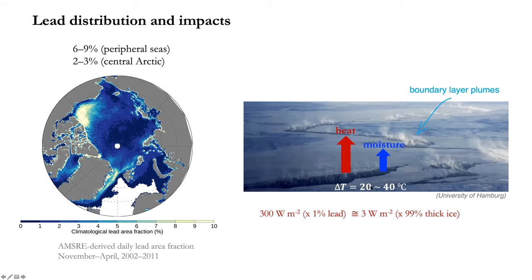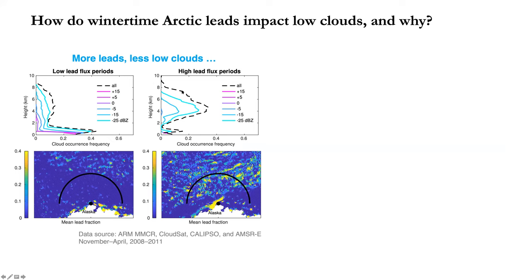The lead impacts are not proportionate to their size. They greatly enhance both heat and moisture fluxes over the leads compared to the surrounding thick ice, mainly because of the large air-sea temperature contrast, especially in wintertime — up to 40°C. Even just 1% of lead cover in the pan-Arctic contributes equally to the rest of the 99% of thick ice in terms of heat exchange between the ocean and atmosphere, giving leads large potential impact on low-level clouds.